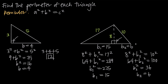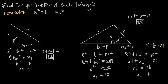So now we know B sub 2 is equal to 6. If we want the length of the entire base, we just add 15 and 6 together — 15 plus 6 gives us 21. So the length of the base is 21. Then to find the perimeter, we take the length of each of the three sides and add them together: 17 plus 10 plus 21 equals 48. So the perimeter of this triangle is 48 units.